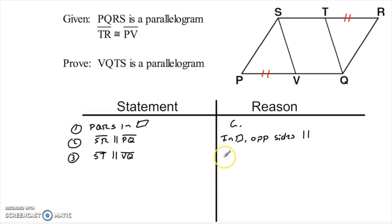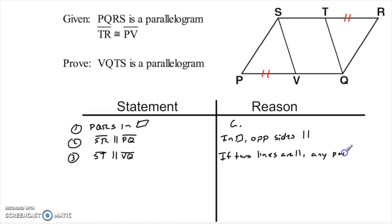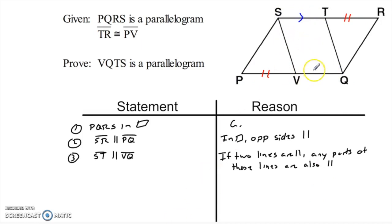What's my reason? I'll explain what's happening: I've got two lines that are parallel, so certainly any parts of those lines are also parallel. If this line is parallel to that one, then ST must be parallel to VQ. Let me mark that, because that's a pair of sides that are parallel in my wannabe parallelogram — I'm trying to prove it is one.